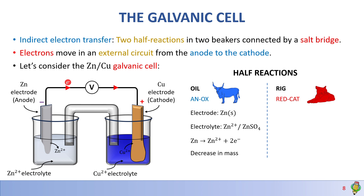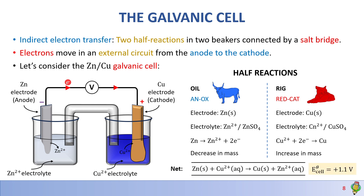We see a decrease in mass on the oxidation side. On the reduction side, the electrode is copper and the electrolyte is copper 2+ or copper sulfate. The half reaction is copper 2+ gaining two electrons from zinc to become copper solid — we notice an increase in mass on the copper electrode. The net ionic reaction gives a voltage of 1.1 volts, which is why we call a galvanic cell a voltaic cell: it's basically a battery used in cell phones, everyday gadgets, and cars. These batteries consist of multiple galvanic cells to give the desired voltage output.